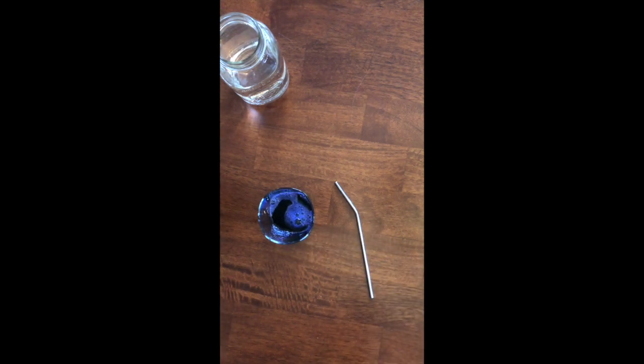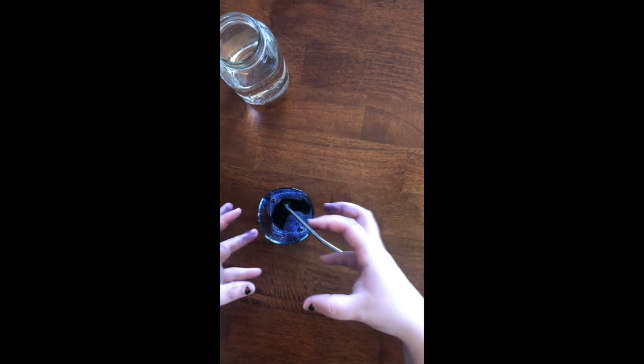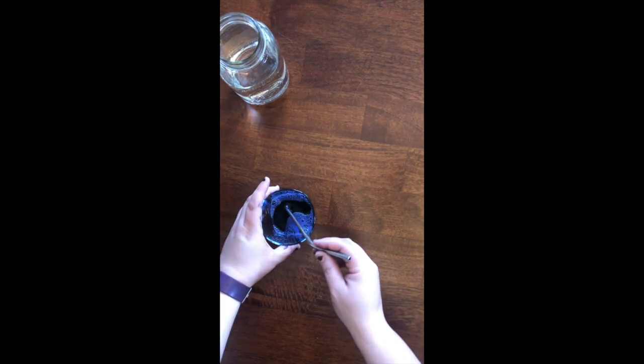So once you have your dish soap and food coloring and water all mixed together, you're going to take a straw and you're going to blow bubbles into the cup, and what will happen is the bubbles will start to come up the glass and kind of dome over the top of the glass. You want it to dome up about the size of a softball. So I'm going to go ahead and do that real quick.